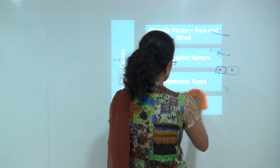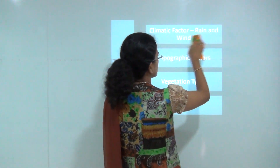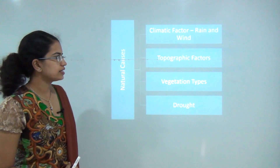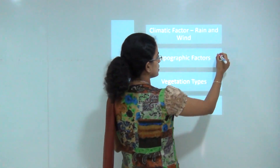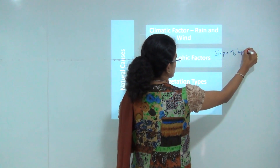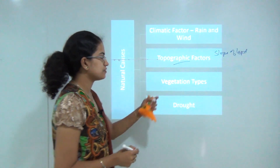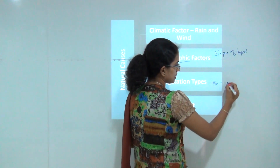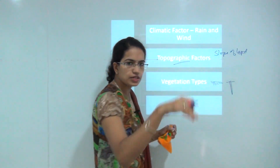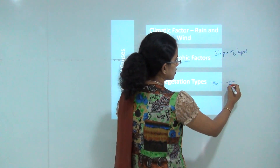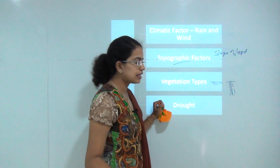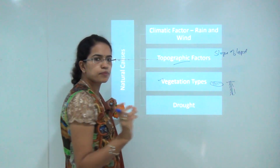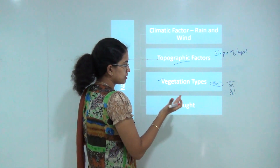The next category is natural causes: rain and wind are the two prominent natural causes we have already discussed. Under topographic factors we have the slope of the land and the nature of the rock. Regarding vegetation type, there are various root systems — some crops have spread-out roots, while others have a taproot system with deeper roots. Rocks with deeper roots tend to hold the soil much more effectively at a deeper level.